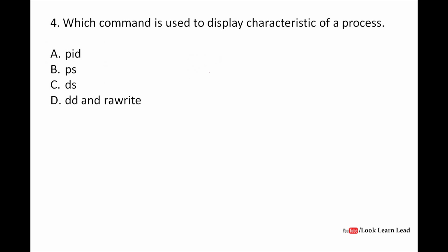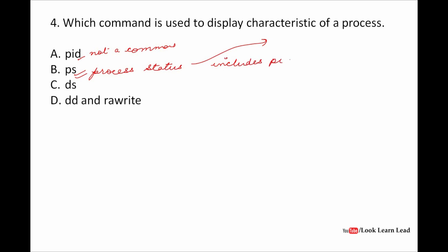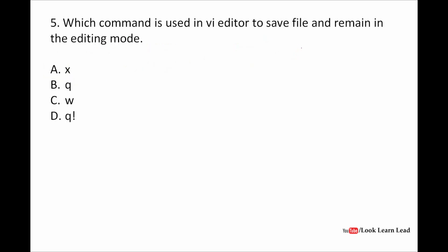Which command is used to display characteristics of a process? PID is a process ID — it is itself a characteristic, not a command. The answer is ps, which stands for process status. It displays the characteristics of a process, including the PID — that is the process ID.